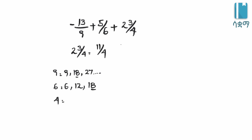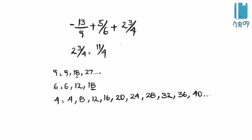For 4, we list: 4 times 1 is 4, 4 times 2 is 8, 4 times 3 is 12, 4 times 4 is 16, 4 times 5 is 20, 4 times 6 is 24, 4 times 7 is 28, 4 times 8 is 32, 4 times 9 is 36.